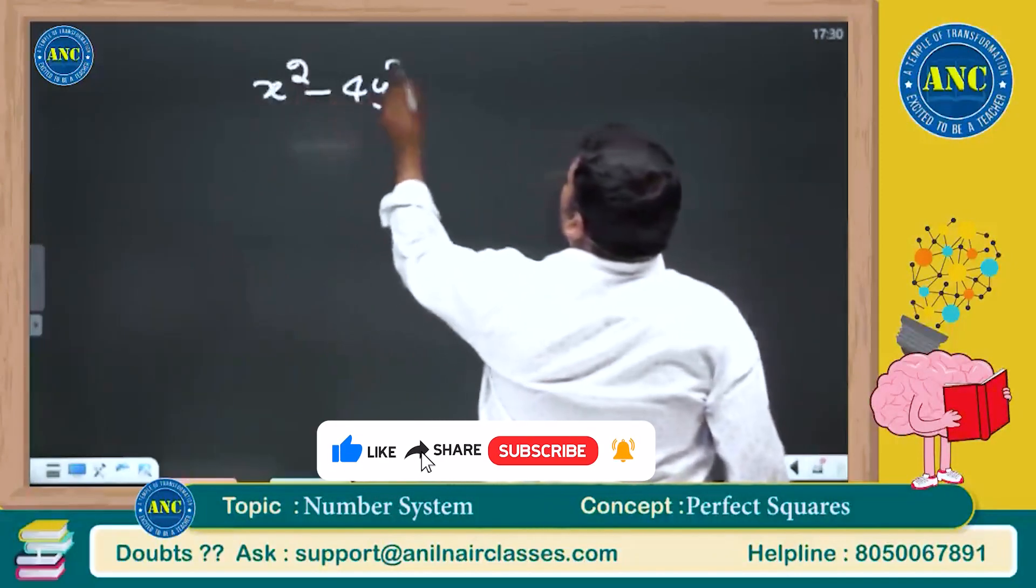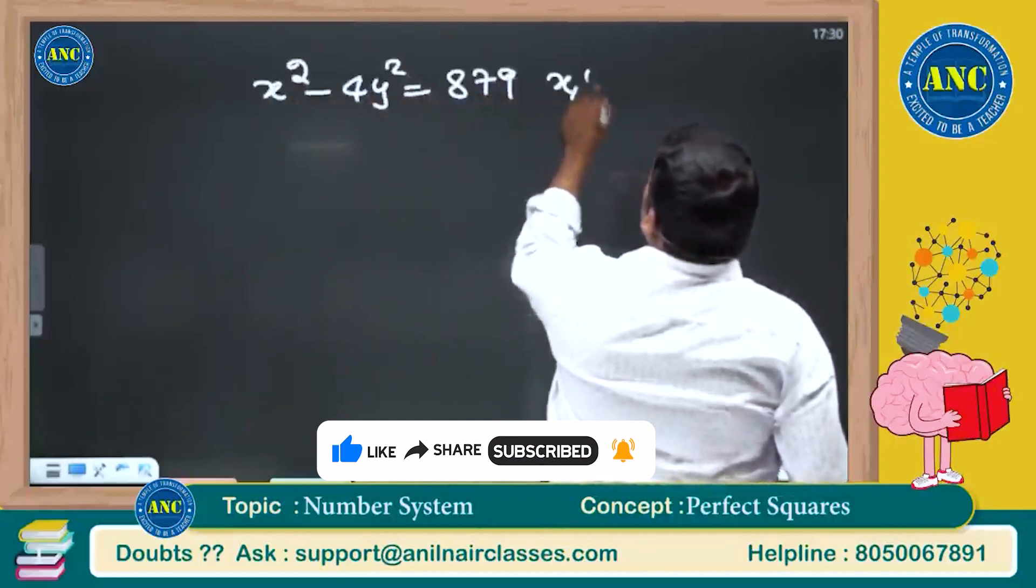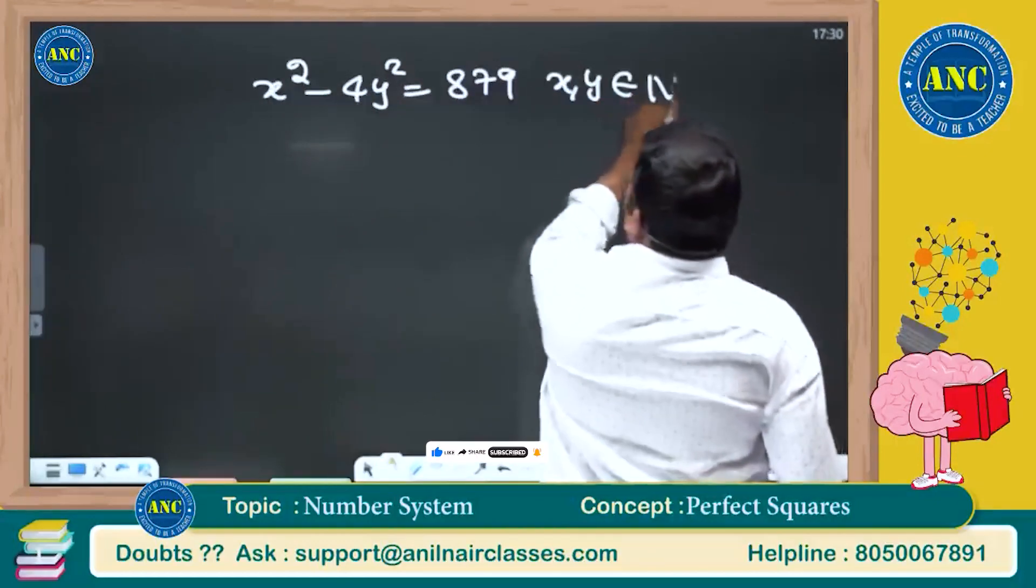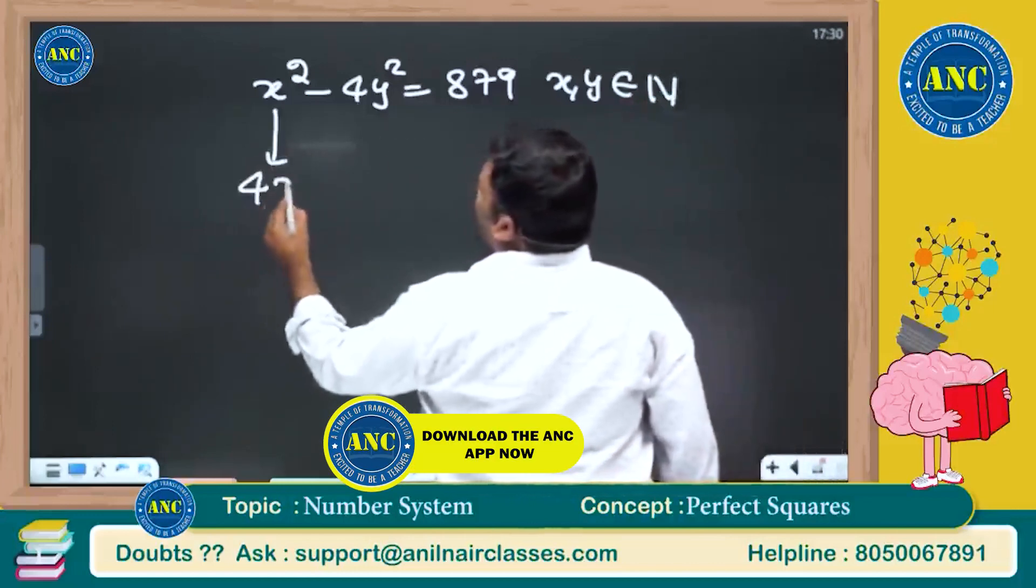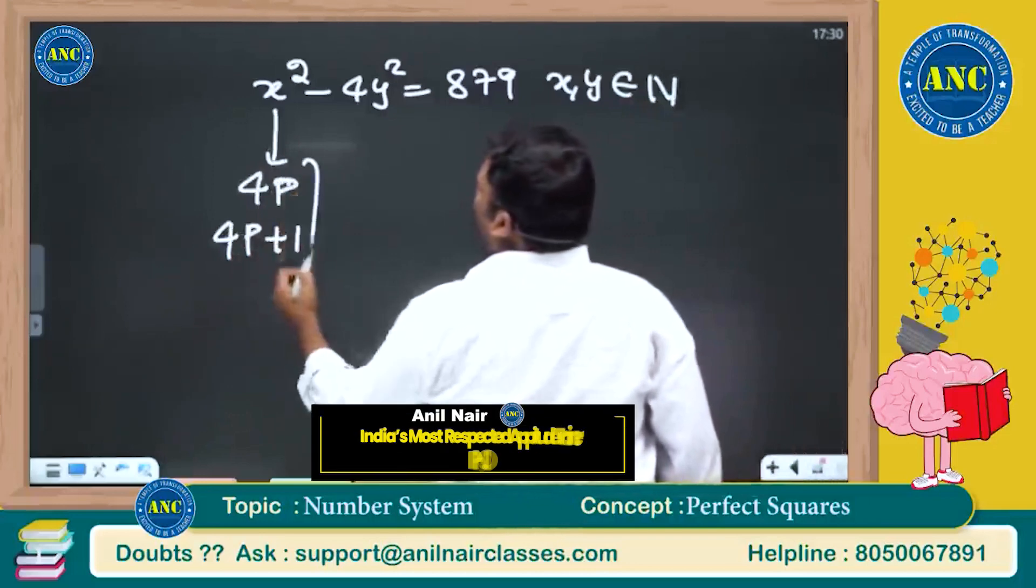x square minus 4y square. In case if you are an Anil Nair student, immediately within 5 seconds you can solve the logic. x square is a perfect square. It is either 4p or 4p plus 1. Are you all with me?